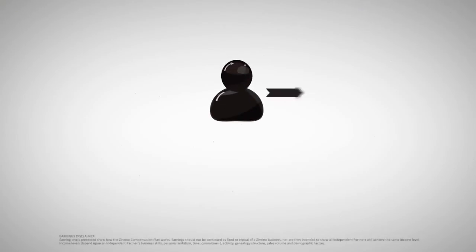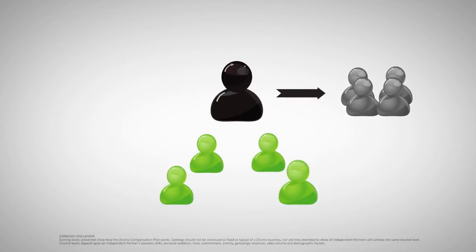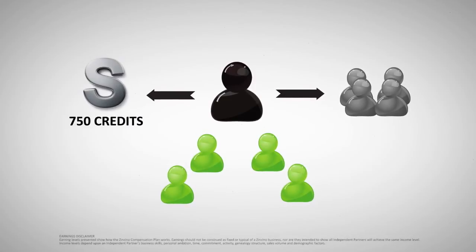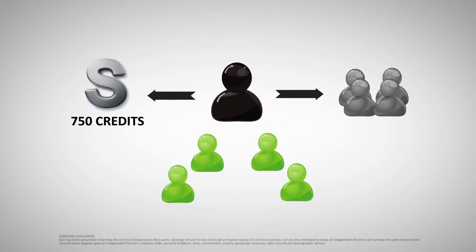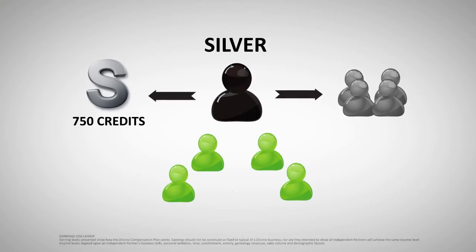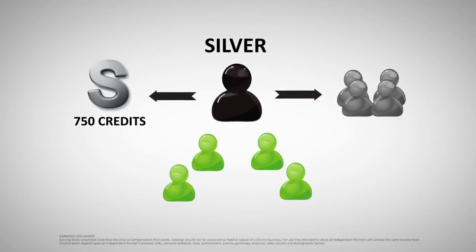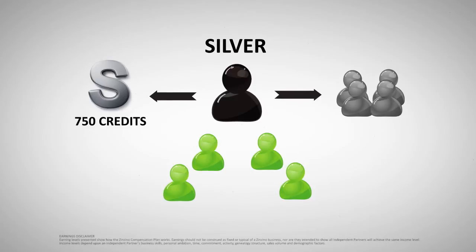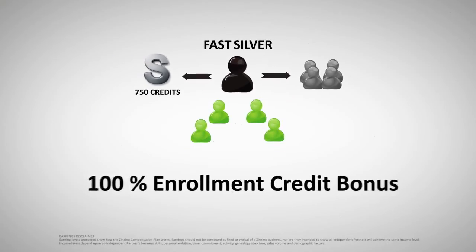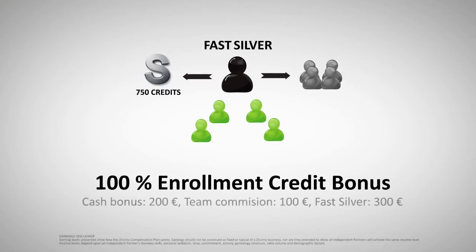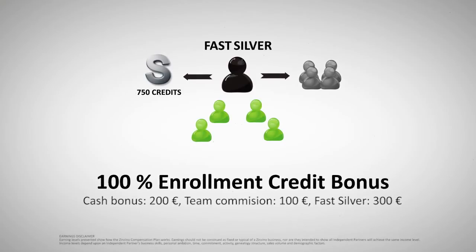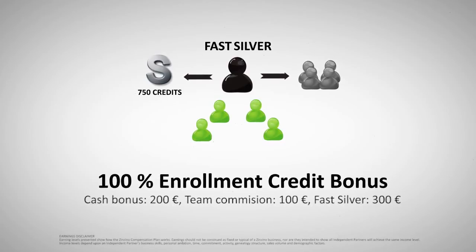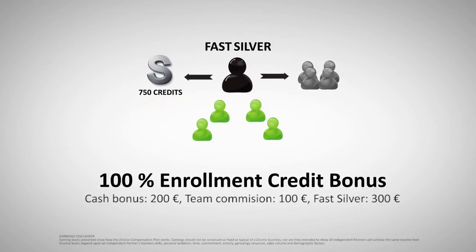Step one is to enroll four customers and build a team of four business partners with a sales volume of 750 credits. When you achieve this, you become silver. If you do it within 30 days from when you got started, you reach fast silver. This gives you a commission and a lifetime enrollment credit bonus. This bonus means that you are now qualified to get 100% increased commission on all new orders in your team.